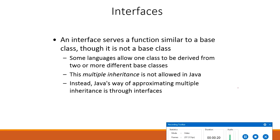An interface is basically a kind of class. Like classes, interfaces contain members and variables, but with a major difference: interfaces define only abstract methods. All the methods defined in the interface are abstract type, and the variables defined in interfaces are final fields. Interfaces do not specify any code to implement these methods and data fields — they contain only constants.